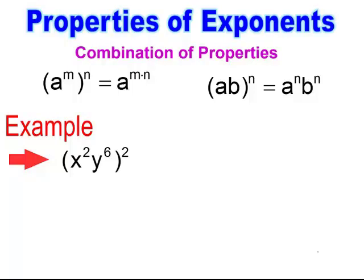I'm going to take that exponent on the outside — that 2 — and give it to the x squared and the y to the 6th. When I do that, I'm going to have the power to the power, which means I have to multiply it to the powers inside. So when I simplify, I'm going to get x to the 4th, y to the 12th.